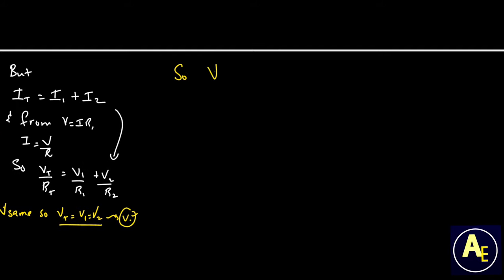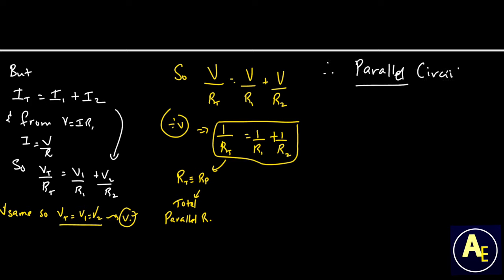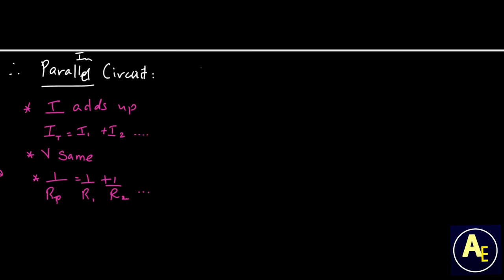Using V = IR again and the total current equation, we can derive the parallel resistance formula: 1/R_parallel = 1/R1 + 1/R2. So in a parallel circuit: current adds up, voltage is the same, and resistance is obtained by this reciprocal equation.